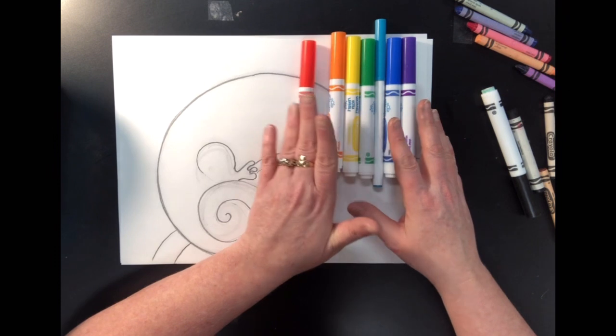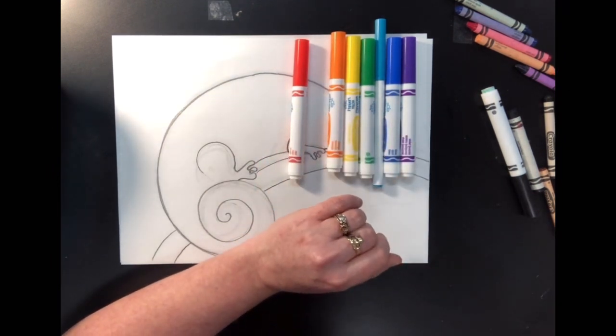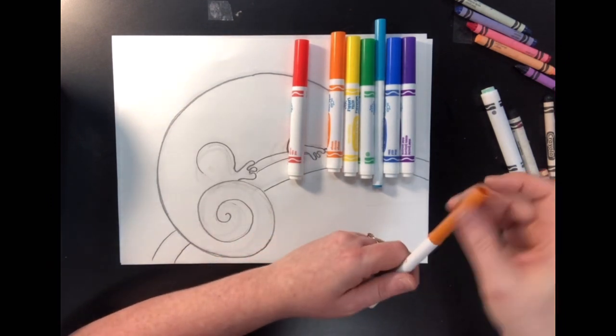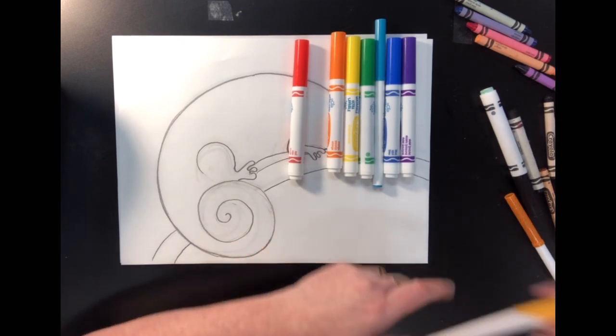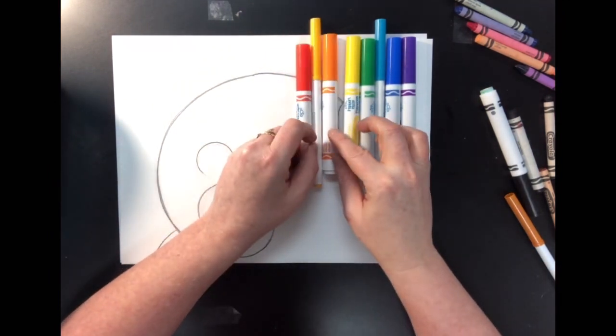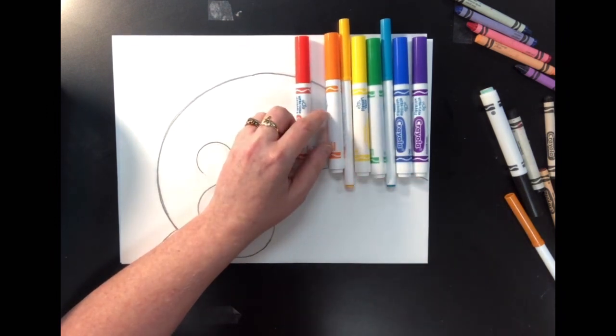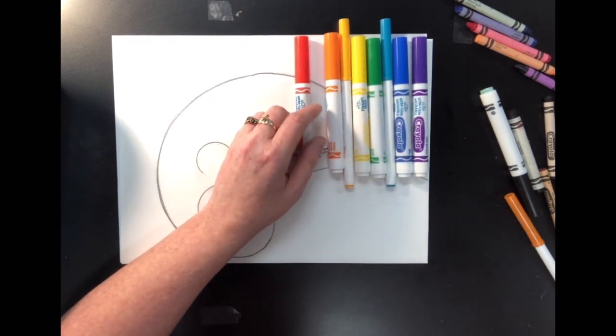And remember, the tertiary colors are yellow orange. So that's when you mix yellow and orange together. Let me find my yellow orange marker. This one's sort of a goldish yellow orange. Right here. And then red orange, which is when you mix red and orange together.